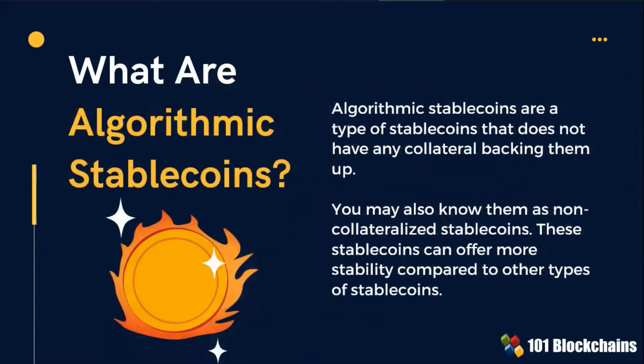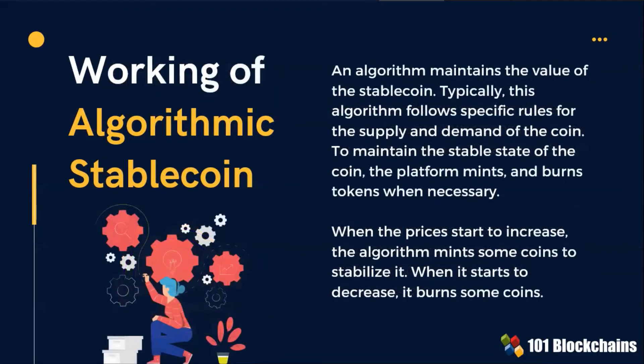But what are algorithmic stablecoins? Algorithmic stablecoins are stablecoins that do not have any collateral backing them up. These stablecoins can offer more stability compared to other types of stablecoins. An algorithm maintains the value of the stablecoin, and to maintain the stable state of the coin, the platform mints and burns tokens when necessary.